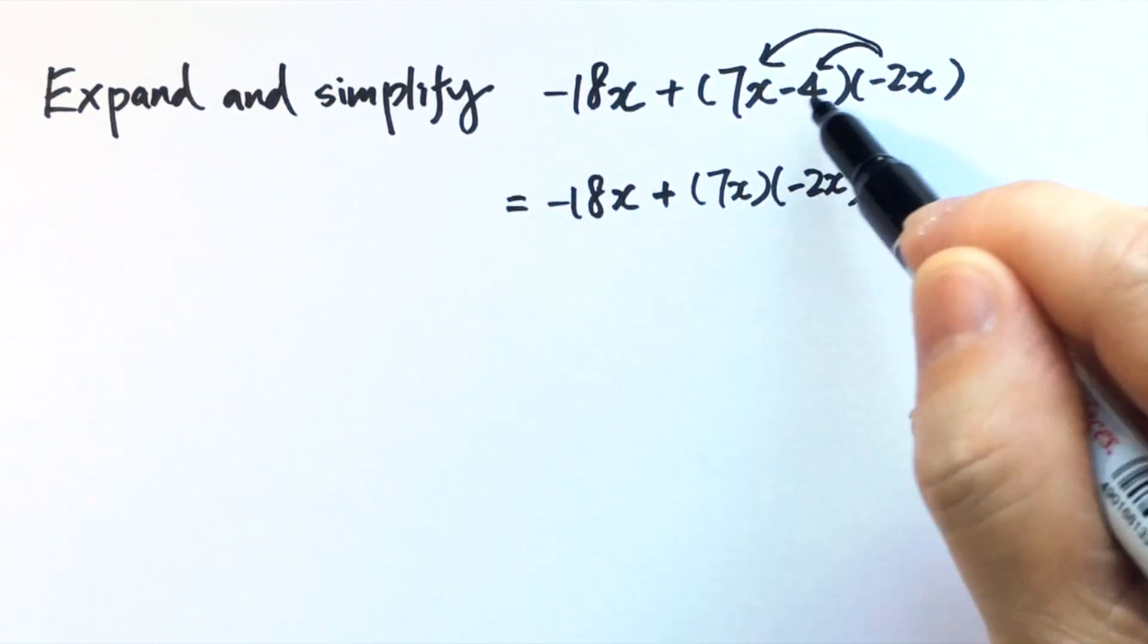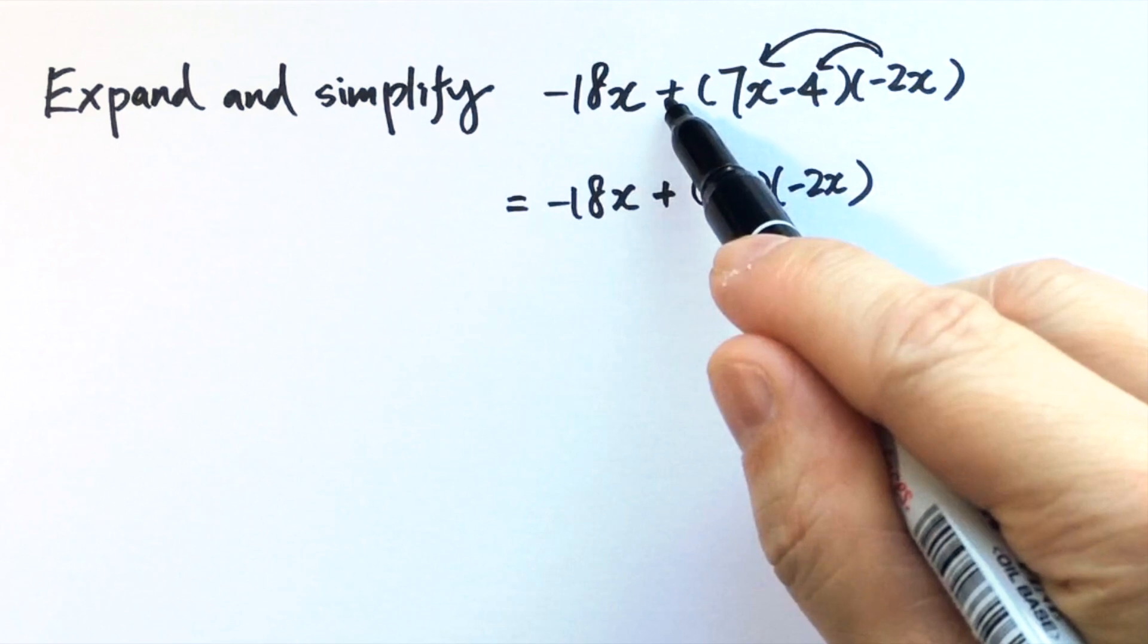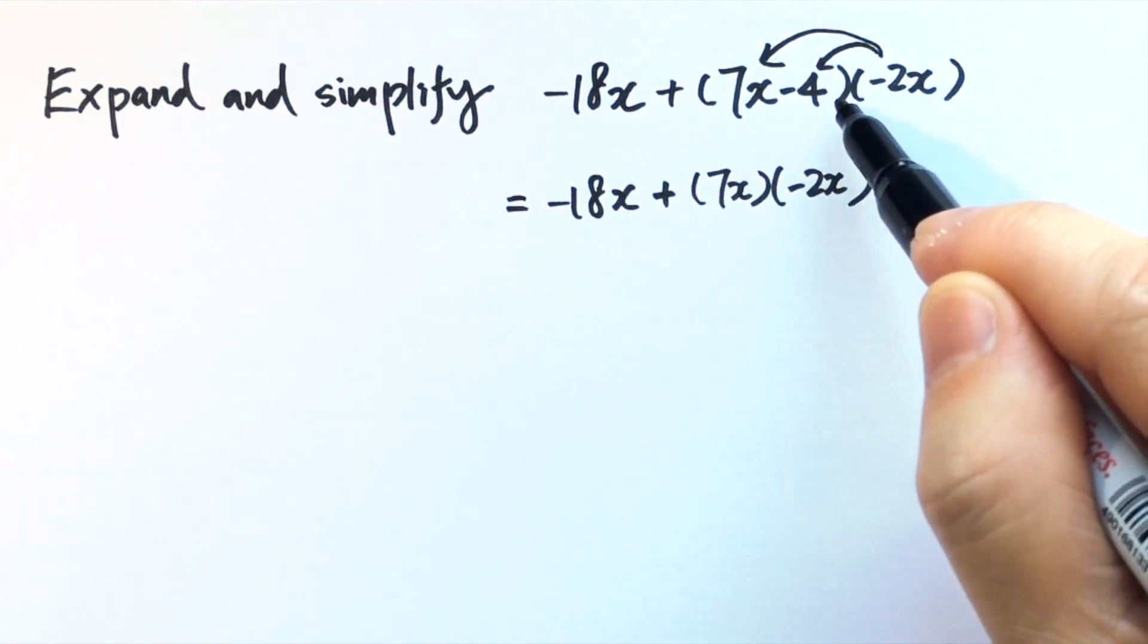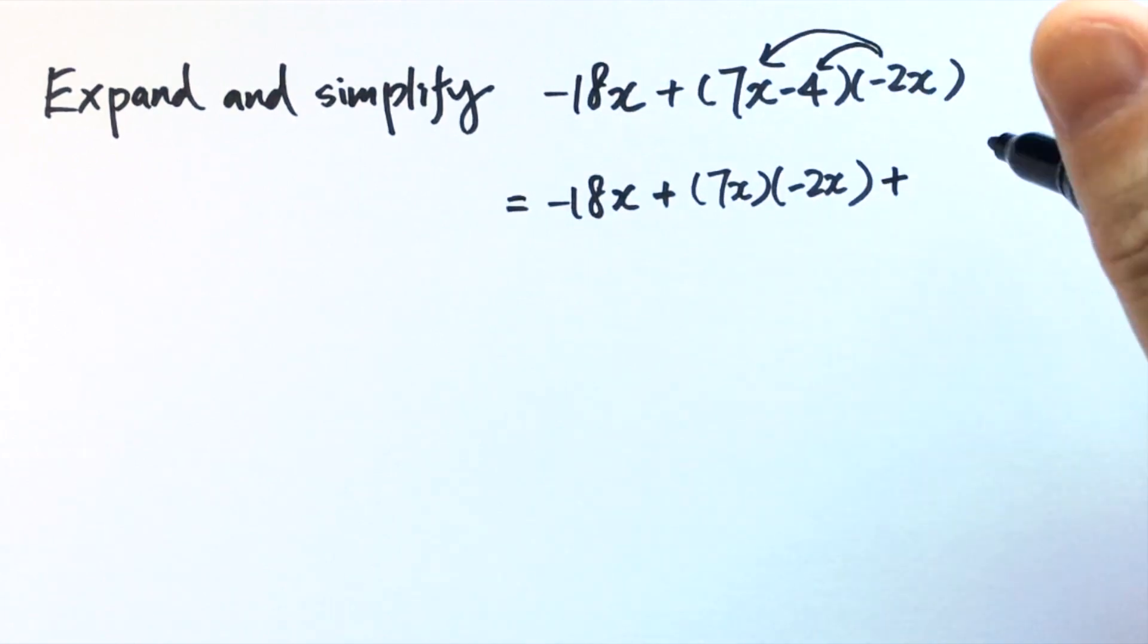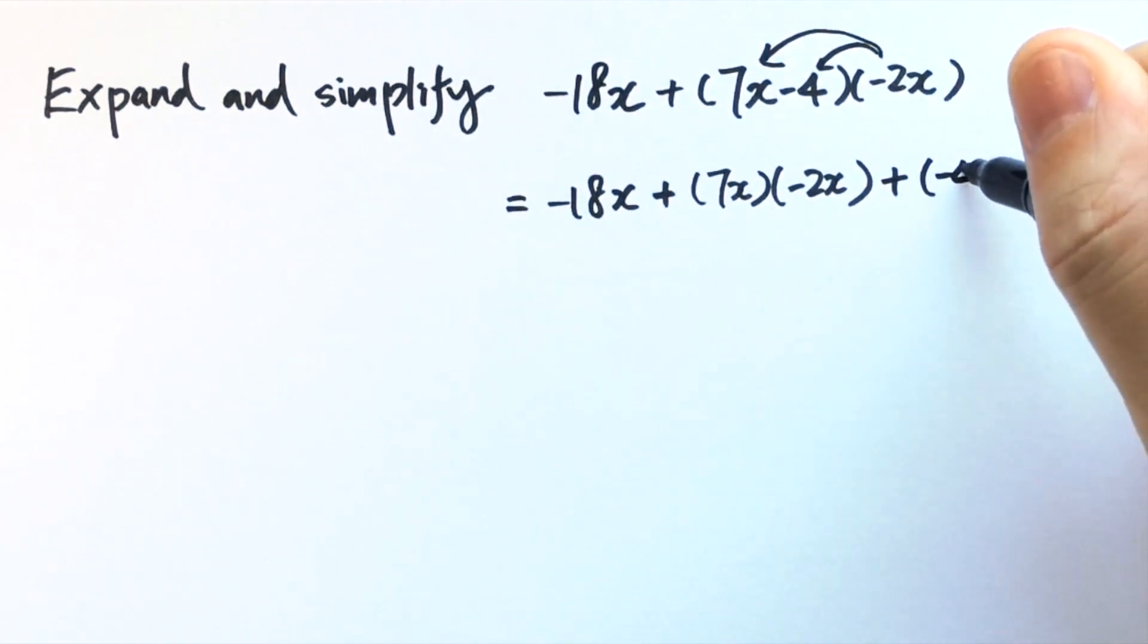These two are both negative numbers, so we have a plus here, plus the product of two negative numbers. This will be a bit complicated, so let's just write down negative 4 times negative 2x first.